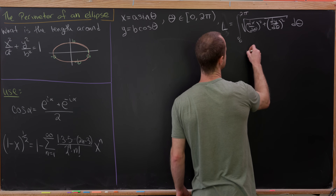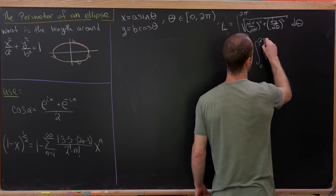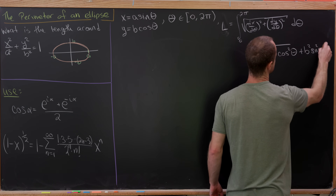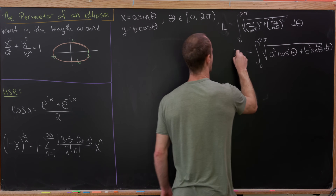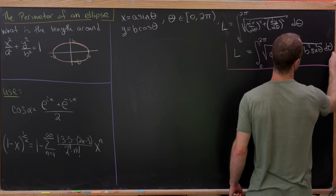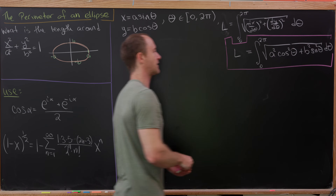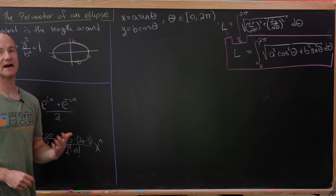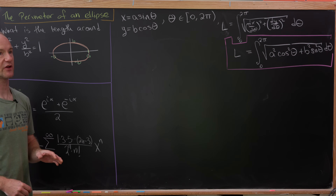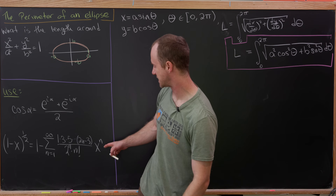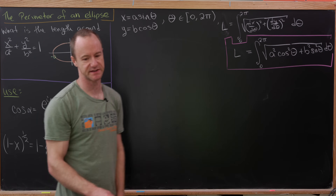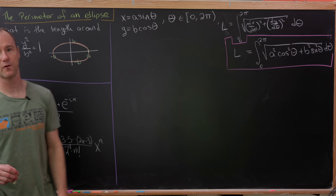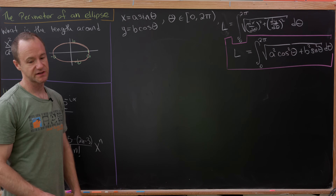This simplifies to the integral from 0 to 2π of the square root of a² cos²θ + b² sin²θ dθ. This integral is well known to not have a nice closed form, which means we'll have to evaluate it using power series — which shouldn't be a surprise given the power series we just derived. We just need to put the argument of the square root into the right form to apply that formula.